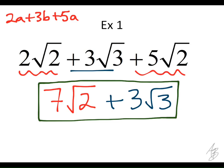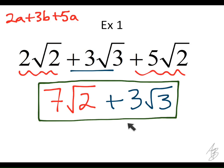When we were combining like terms with variables, we made sure that we wrote them in a certain order — alphabetical order, right? So we wrote A's before B's, B's before C's, and so on. When we're writing our answer with square roots, we want to write them in correct order, and the order we're going to use is from smallest to biggest. So since the square root of 2 is smaller than the square root of 3, we're going to put the square root of 2 terms first, and then the square root of 3 terms.